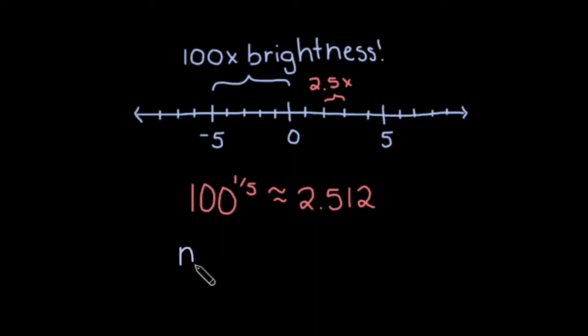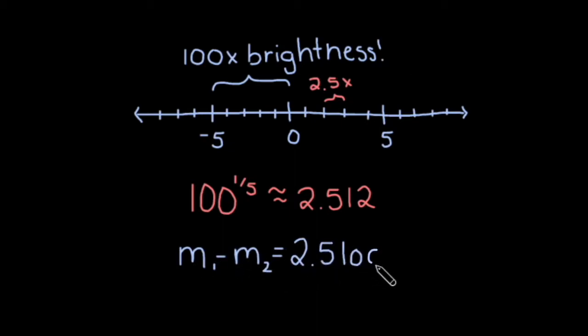The difference in apparent magnitudes can thus be related to each other by the following equation: the first magnitude minus the second magnitude equals 2.5 times the log of the ratio of fluxes.